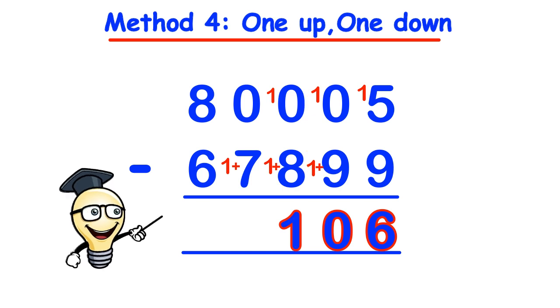Now since 0 cannot take away 8, do 1 up and 1 down so 1 plus 6 equals 7. So now 10 take away 8 equals 2 and finally we can see that 8 take away 7 equals 1 so the answer is 12,106.